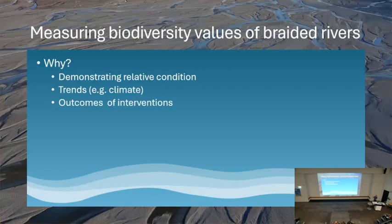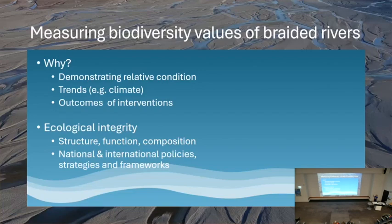The first question is: why would we want to measure biodiversity in a braided river? We want to be able to demonstrate relative changes — usually trends over time as a result of things like environmental change, climate change — and also from DOC's perspective, the outcomes of any management interventions. We often use the term biodiversity in our strategies, policies and frameworks, and also ecological integrity, which is a term I've come across a lot at DOC. Biodiversity is a key part of ecological integrity, so it's really important to get a handle on what the biodiversity is.